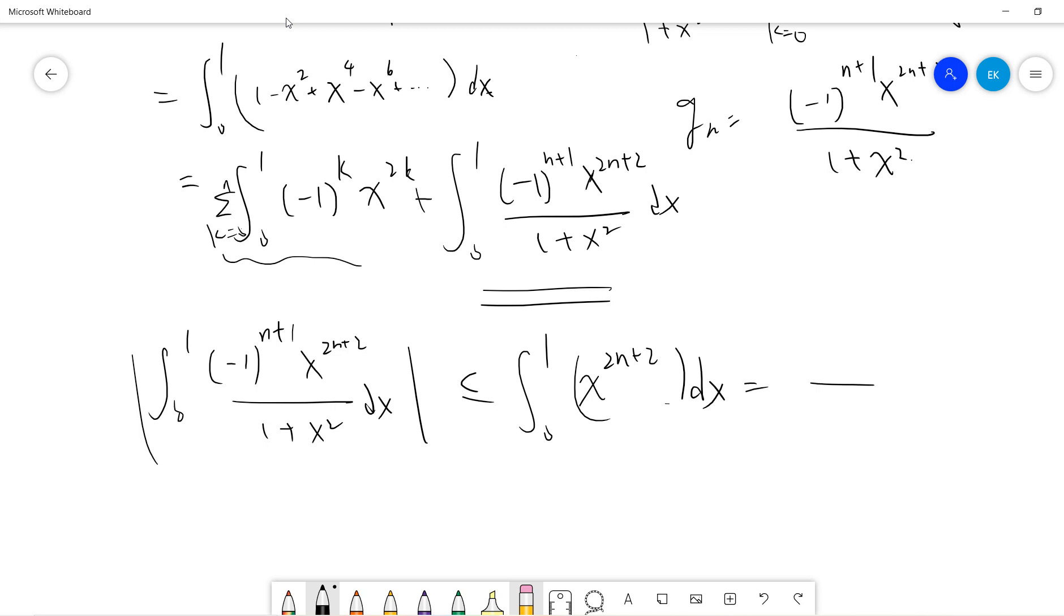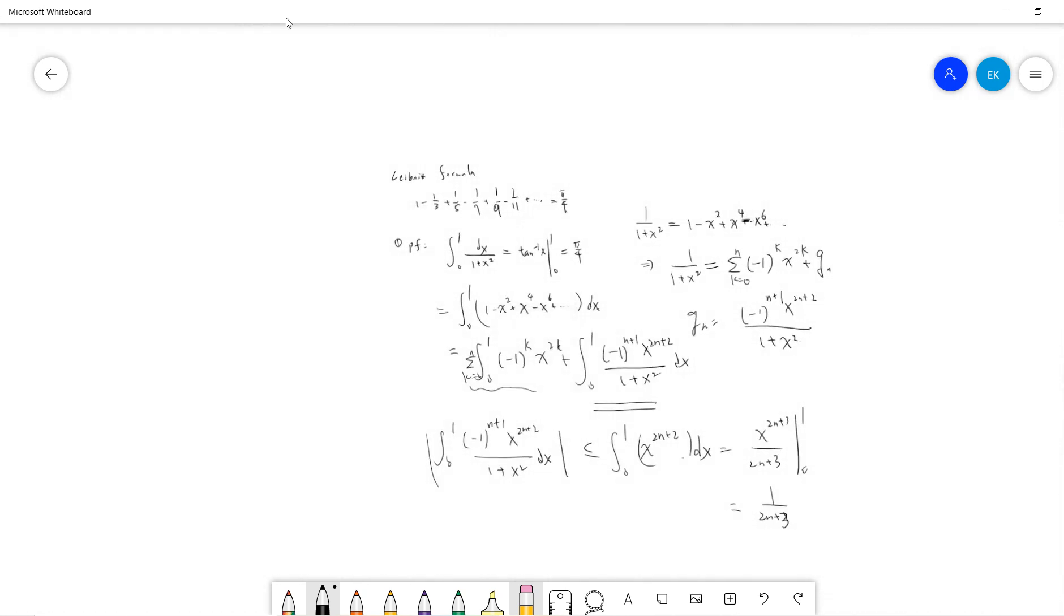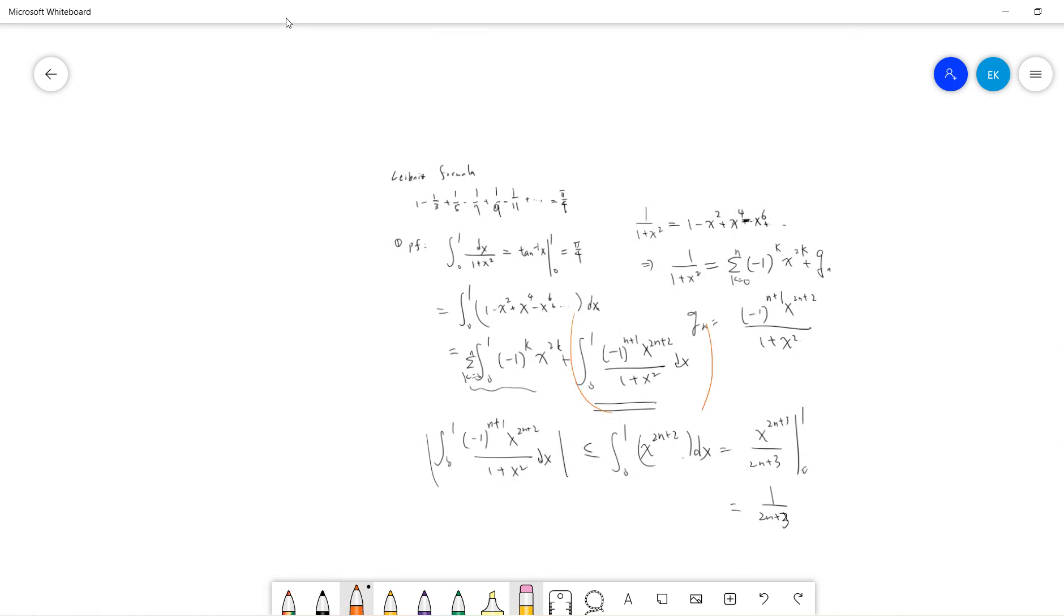This becomes x^(2n+3)/(2n+3) evaluated from 0 to 1, which equals 1/(2n+3). We can take n to infinity, and by the squeeze theorem, this term goes to zero.